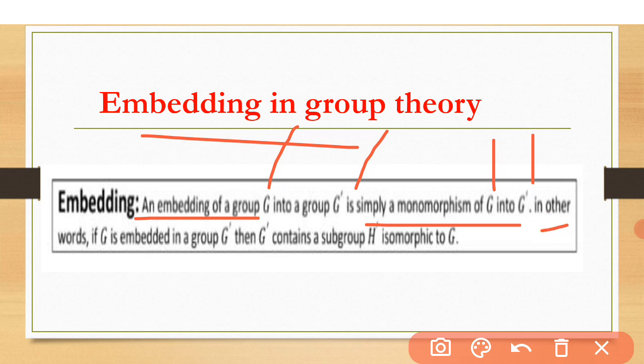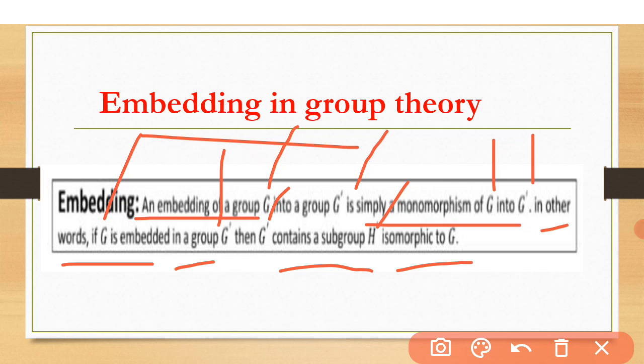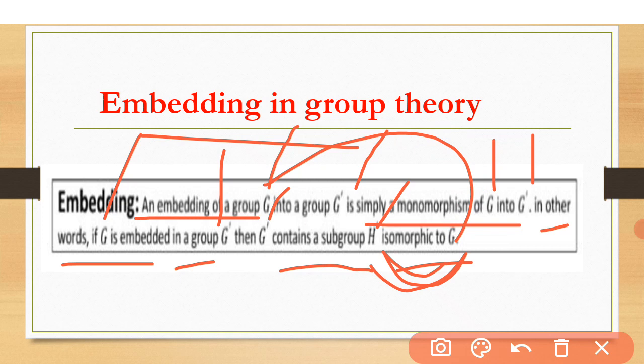In other words, if G is embedded in group G prime, then G prime contains a subgroup H that is isomorphic to G. If G is embedded in G prime, there must exist a subgroup H in G prime which is isomorphic to G. Isomorphic means the mapping between H and G is bijective — both one-to-one and onto — and also a homomorphism.